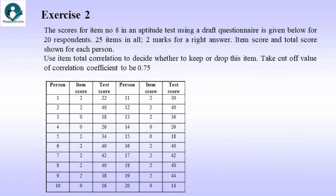So, let's see an example. The scores for item number 8 in an aptitude test using a draft questionnaire is given below for 20 respondents who actually took the test. 25 items in all, two marks for a right answer. Item score and total score for each person is shown here. Which item? This is the 8th item, item number 8. So, use item total correlation to decide whether to keep or drop this item and take the cutoff of correlation coefficient to be 0.75. That we need to get something more than that. So, this is the data, person 1 to 20. And for each one of them, we know what they scored in item 8 and what is the total test score. So, if item score is x and test score is y, we just need to run a correlation between x and y. And because this data is continuous, we can look at product moment correlation coefficient. That's exactly what has been computed in the solution.